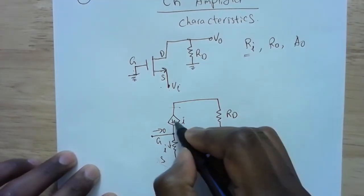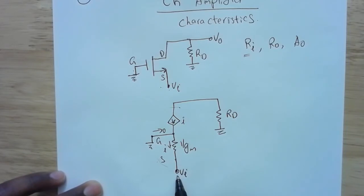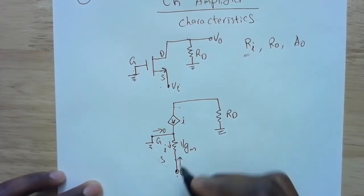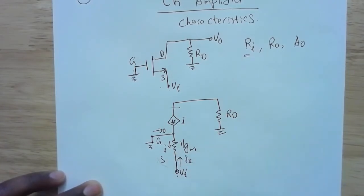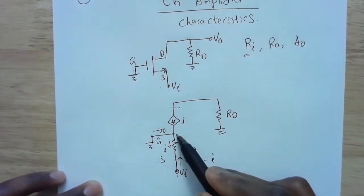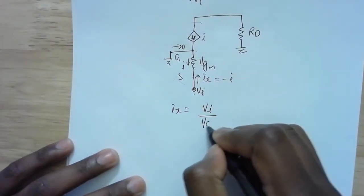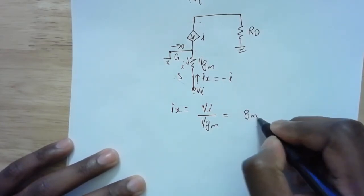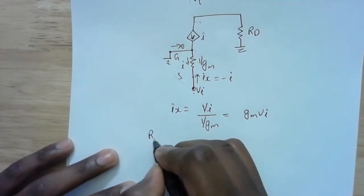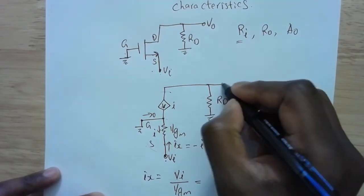The input impedance is found by applying a voltage VI and measuring how much current flows in. Let's call that current IX. IX equals minus I. The voltage drop across the 1/gm resistance is VI minus 0, which is VI, so IX equals VI divided by 1/gm, which equals gm·VI. Therefore, RI equals VI over IX equals 1/gm. So the input impedance RI is equal to 1/gm.